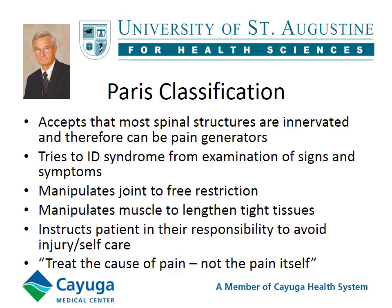In my training, I did my manual therapy training through the University of St. Augustine. Here is a classification described by Dr. Stanley Paris. The general concept is that he accepts that most spinal structures are innervated and therefore can be pain generators. He tries to identify a syndrome from the examination of signs and symptoms. As a manual therapist, he will manipulate joints to free restriction, manipulate muscles to lengthen tight tissues, and instruct the patient in their responsibility to avoid injury and self-care. His idea is to treat the cause of the pain, not the pain itself. I believe all of this is well and good except for the last statement, as sometimes the pain itself is actually a problem. Modern neuroscience would suggest that sometimes we do need to address the pain itself, or at least the pain behaviors.